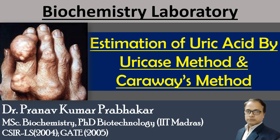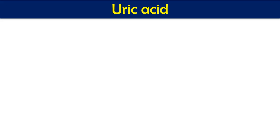Hello friends, welcome to my channel Clinical Biochemistry by Dr. P.K. Prabhakar. Today I am going to talk about estimation of uric acid by two different methods: one is called the uricase method, which is an enzyme-based method, and the second is called the Caraway method, which is the manual method. We will see both methods one by one, and then discuss gout — primary gout, secondary gout — and other features.